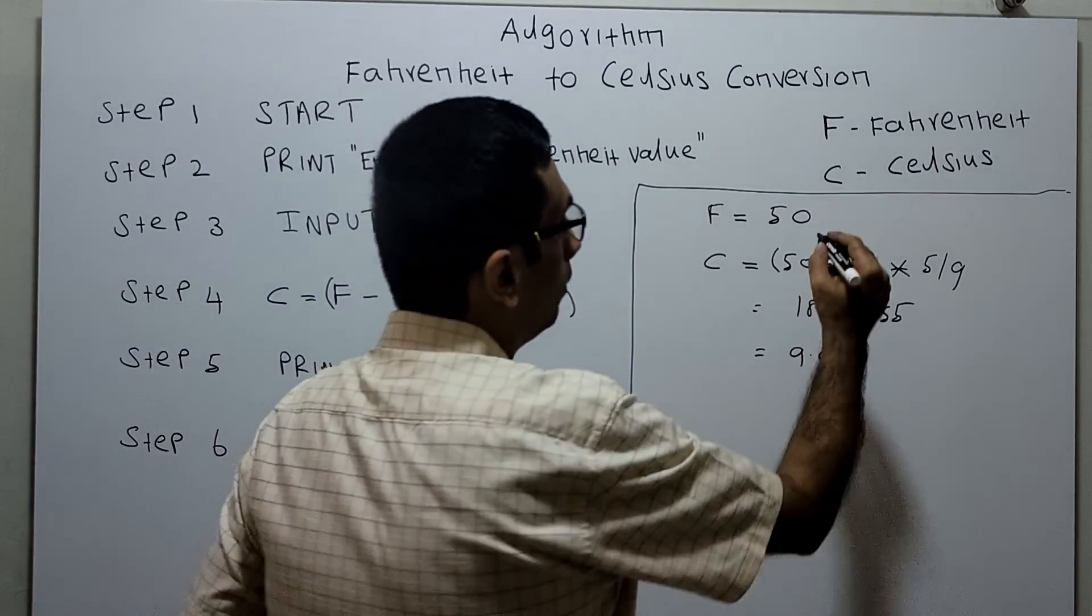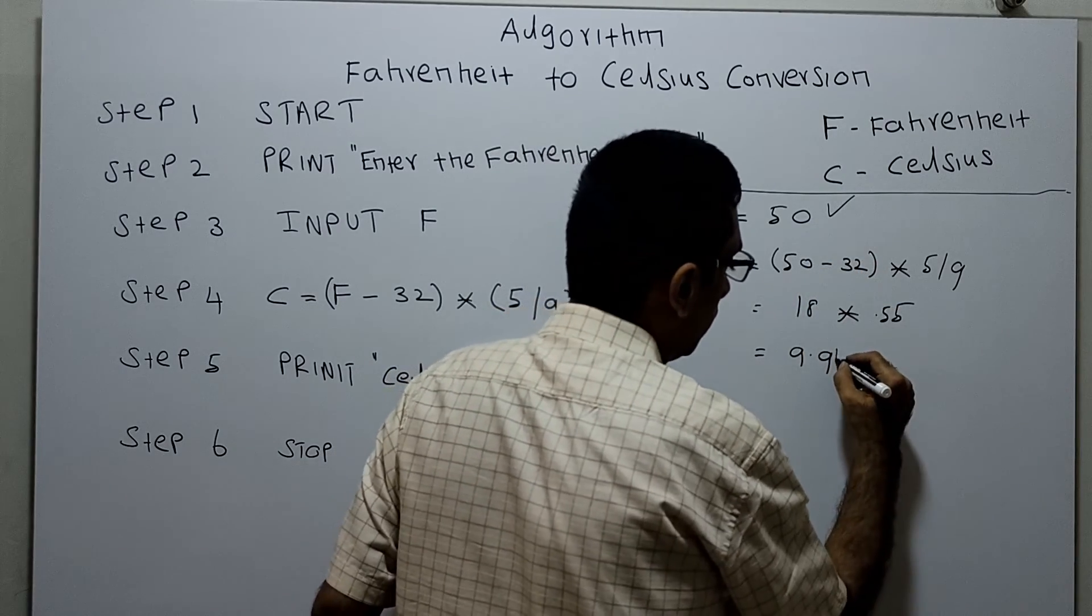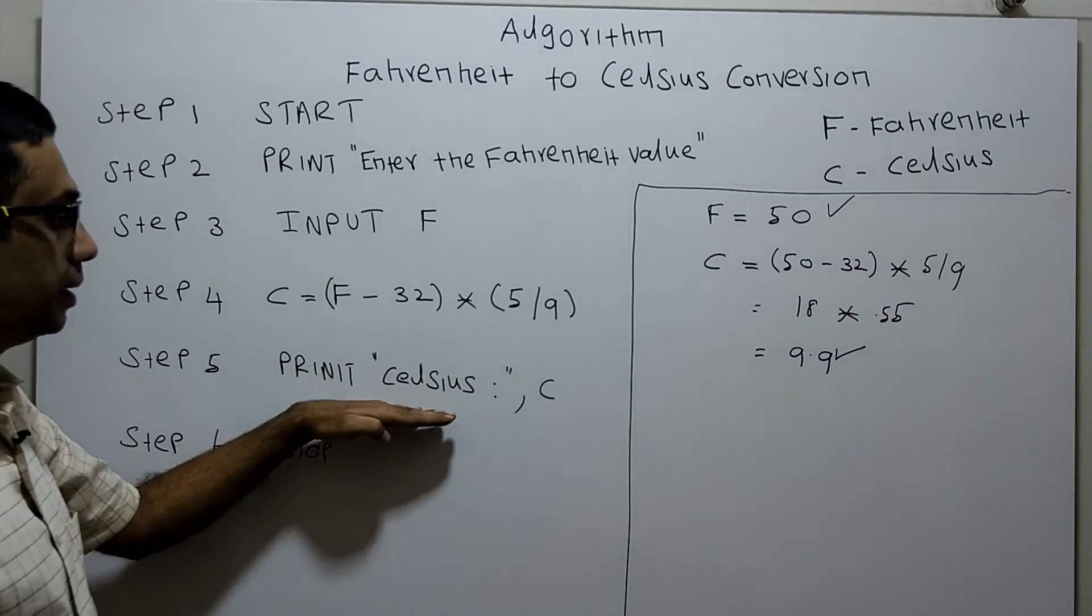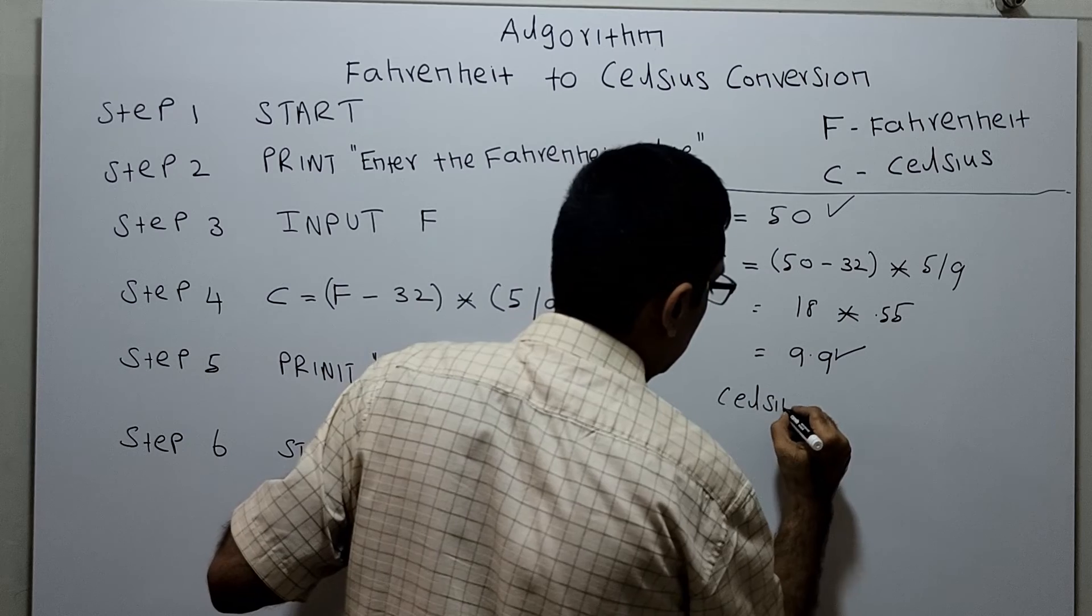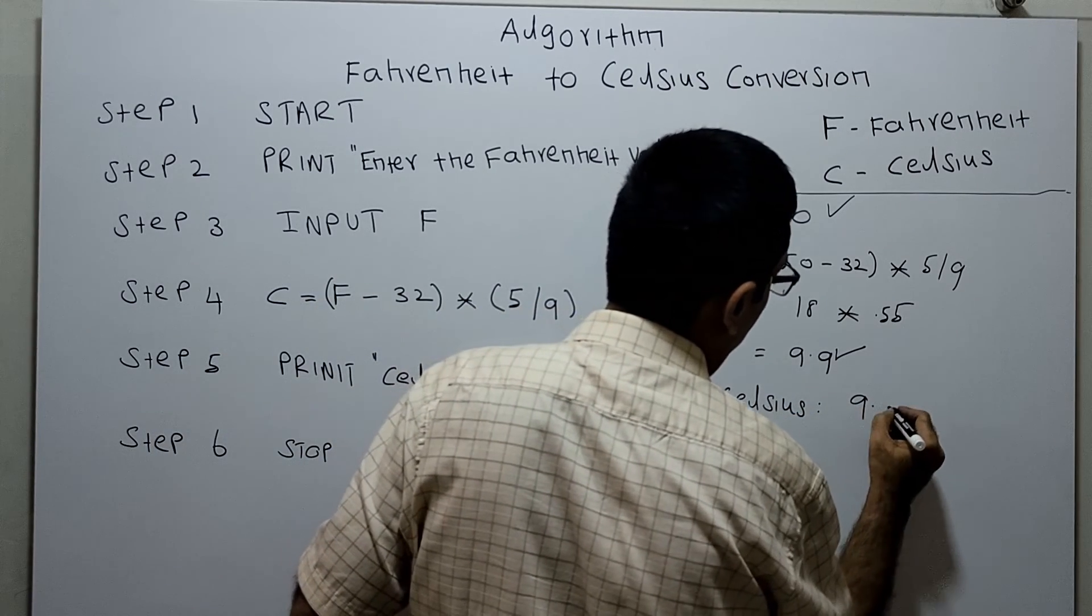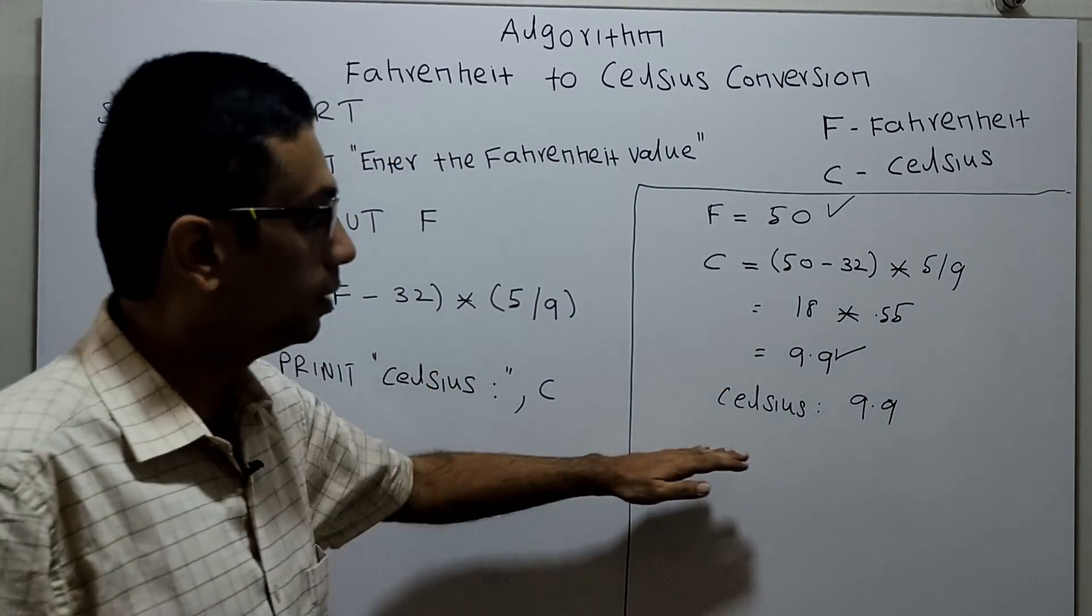So if the Fahrenheit is 50 degrees, my output converted into Celsius is 9.9 degrees. This is calculated using the formula where Celsius equals the output. Print Celsius colon and the value is 9.9, which we can round to 10. This is the correct answer.